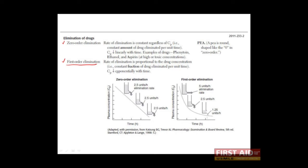A drug is said to have zero-order elimination when its clearance proceeds by a constant amount per unit time. In our hypothetical drug, notice that with each hour, a constant amount of drug is being removed from the body. Here we have it written as 2.5 units, but we could have just as easily said 200 milligrams or 100 milligrams.